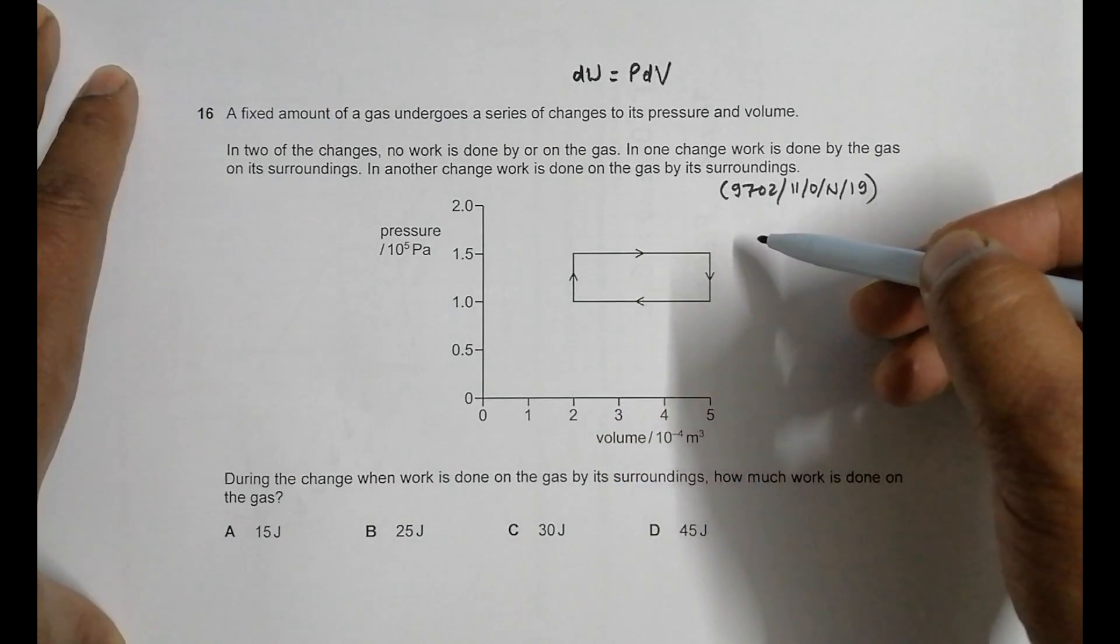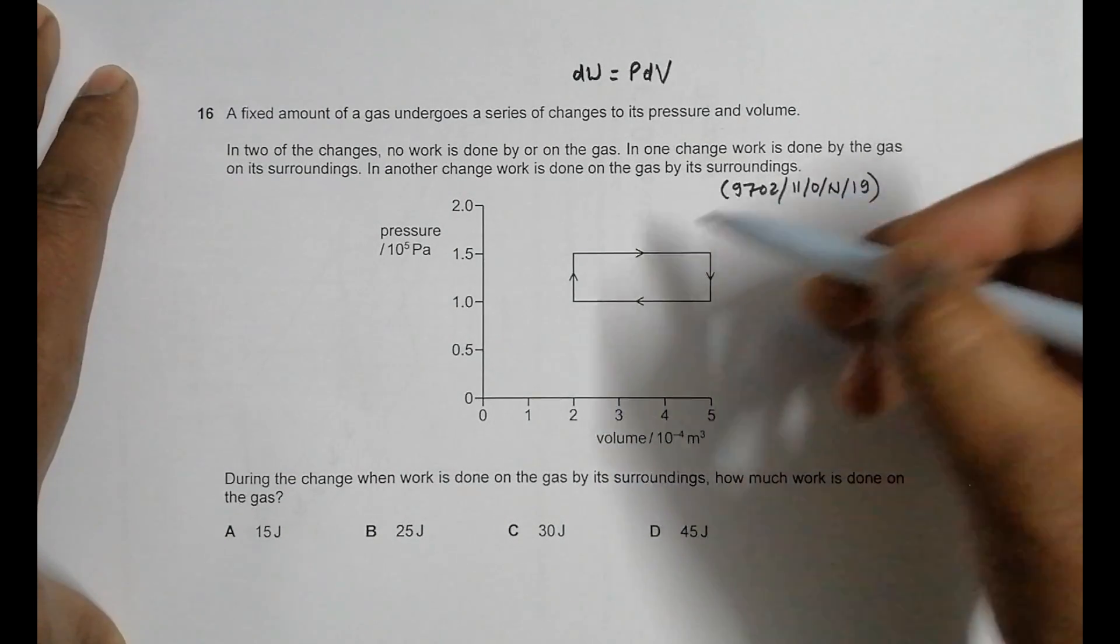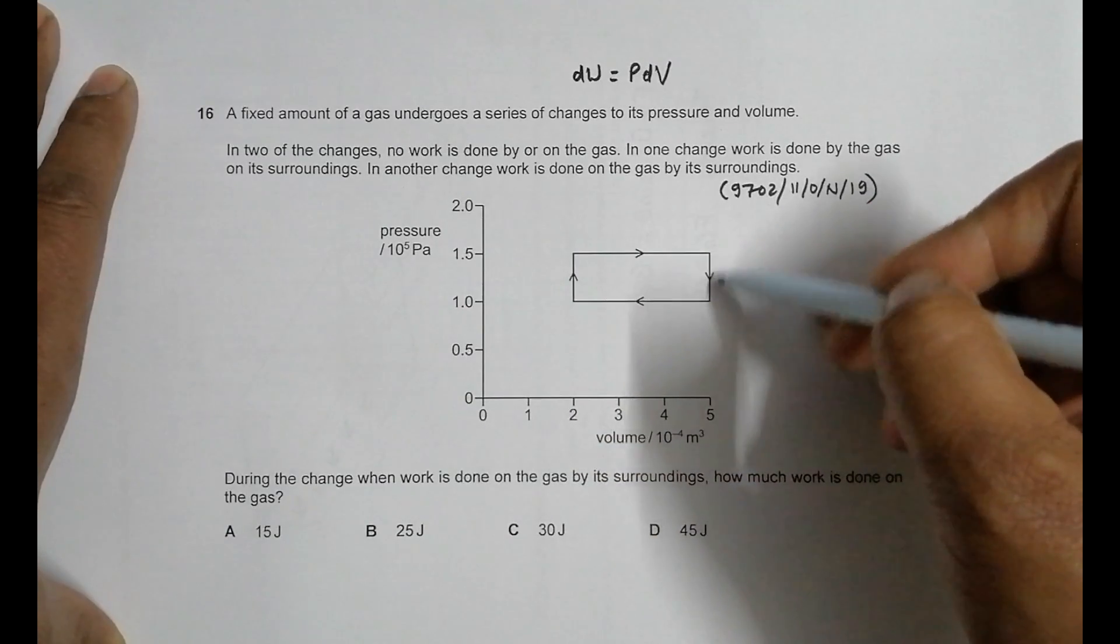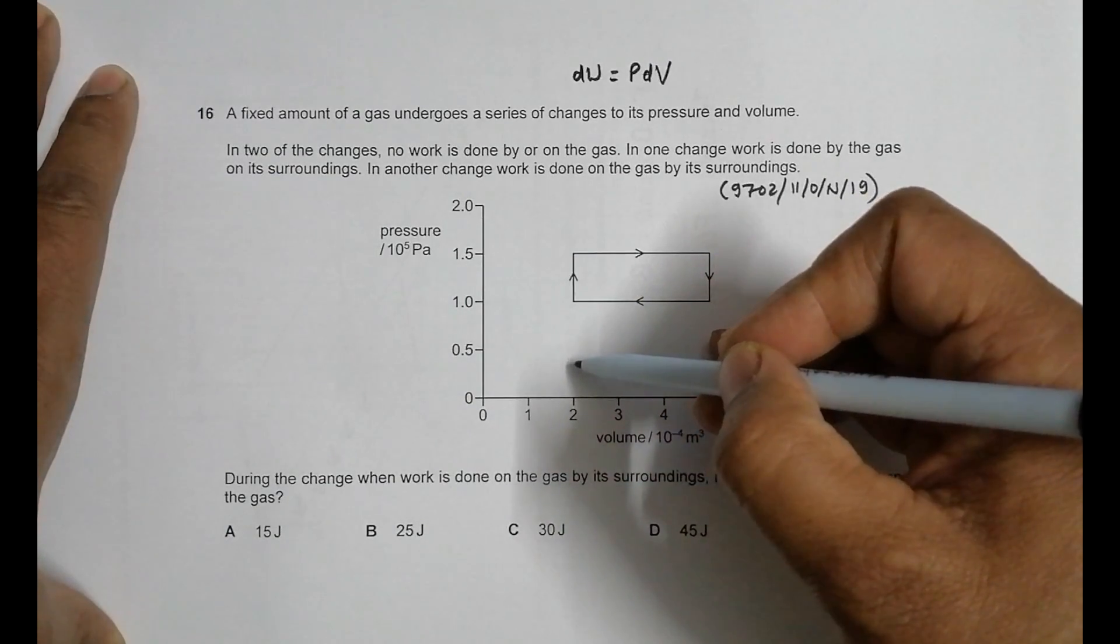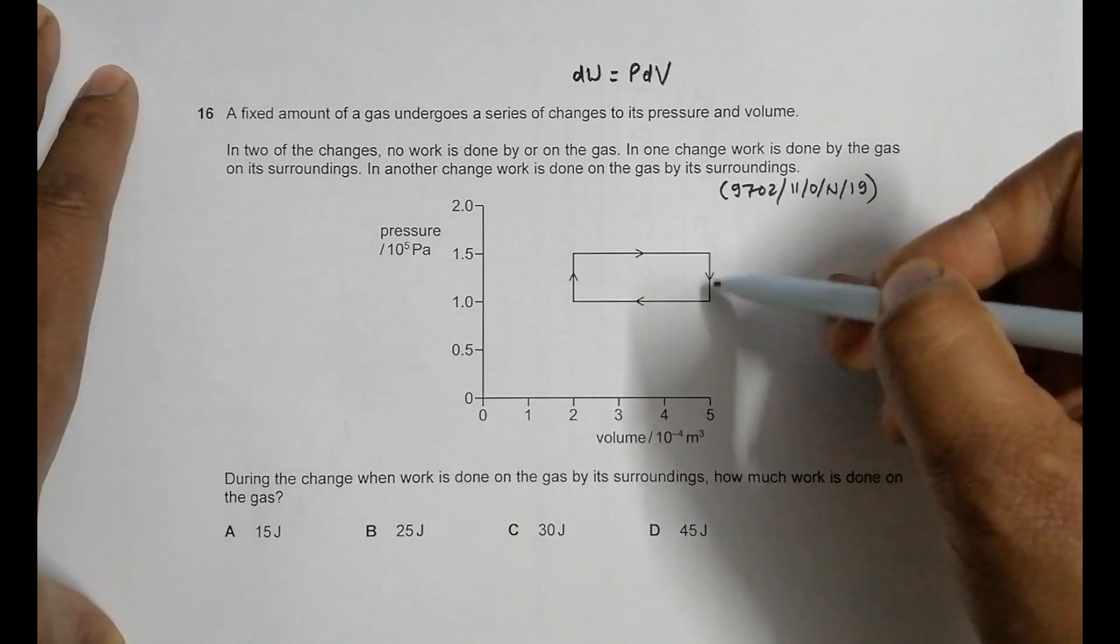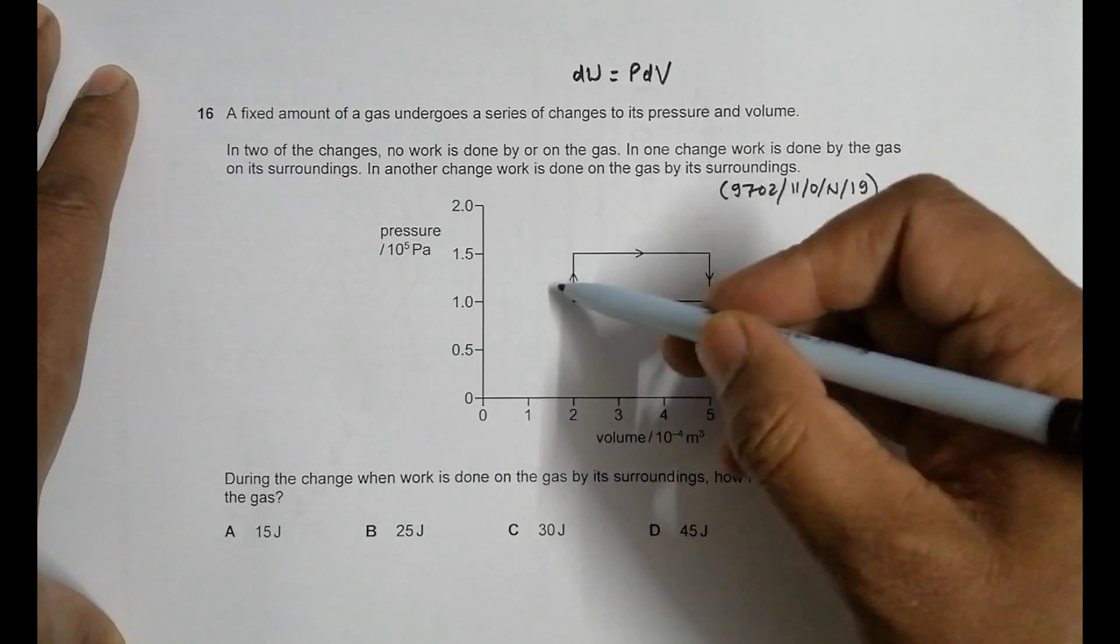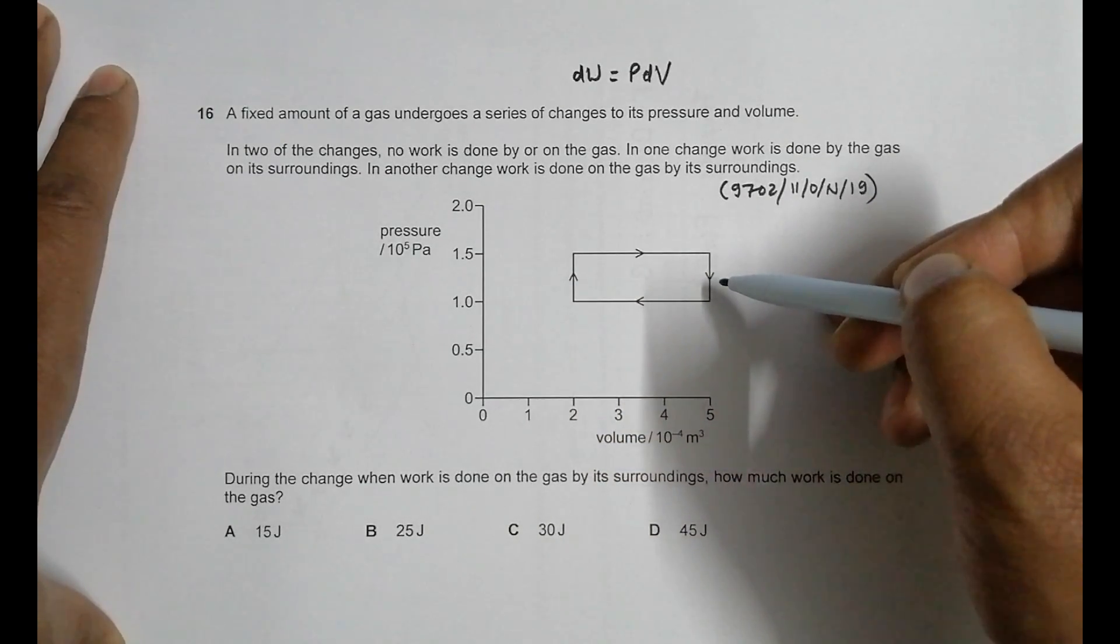Those changes are this change and this one, because in these changes pressure changes but volume does not change. That's why in these two changes no work is done by the gas or on the gas.